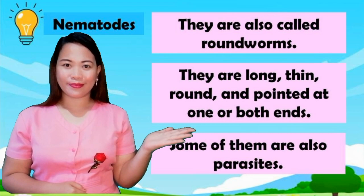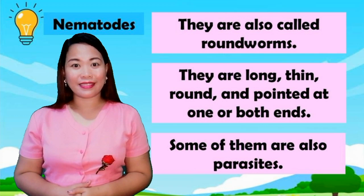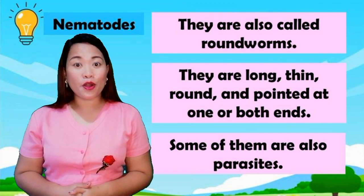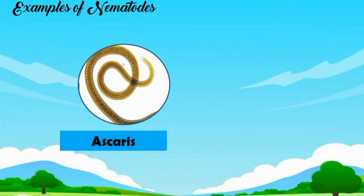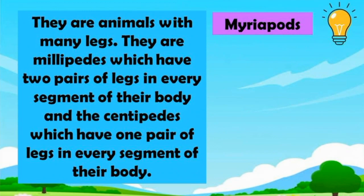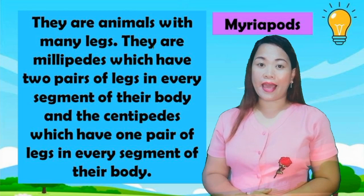Nematodes are also called roundworms. They are long, thin, round, and pointed at one or both ends. Some of them are also parasites. Examples of nematodes: ascaris, hookworms.